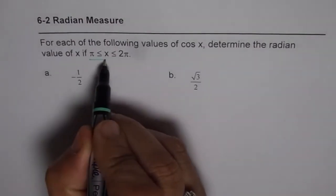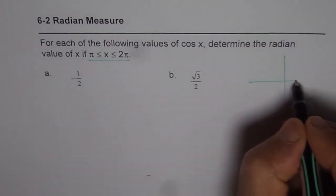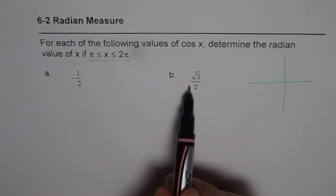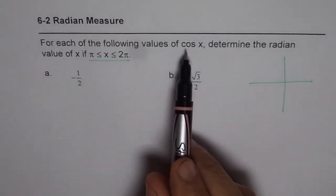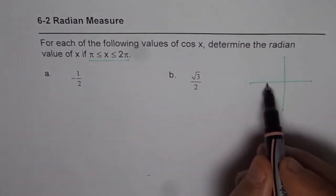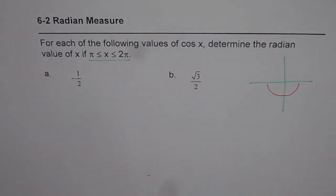Note the domain for x. Let's first draw the coordinate plane. We're looking for where cosine x has these given values, but the angle x is within this part. So it could be from π to 2π.